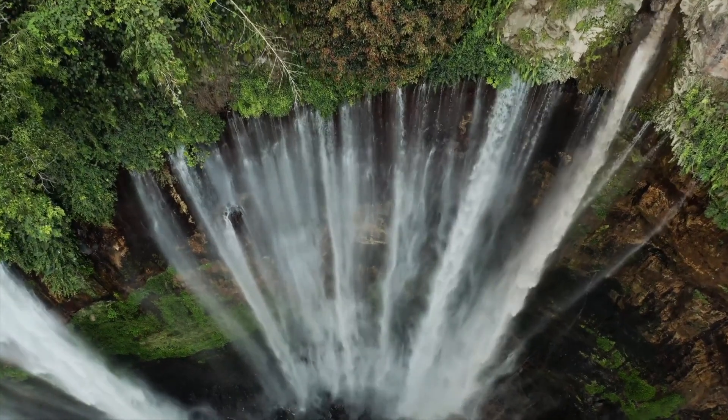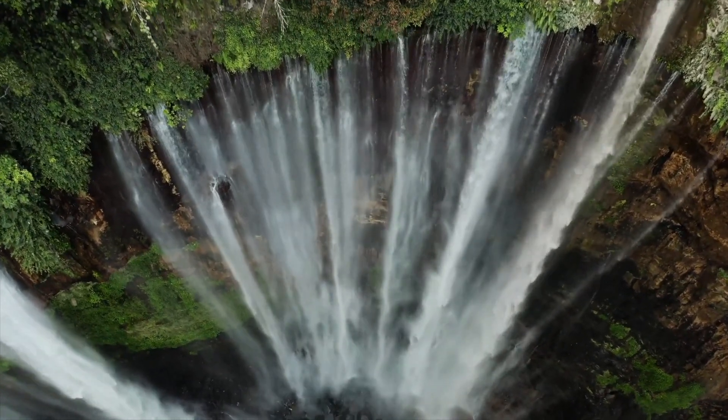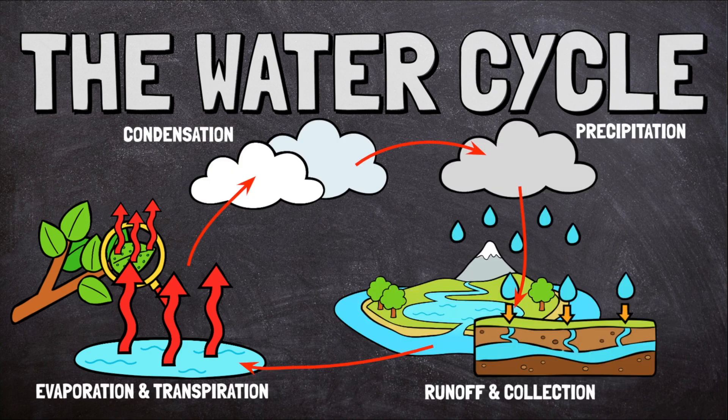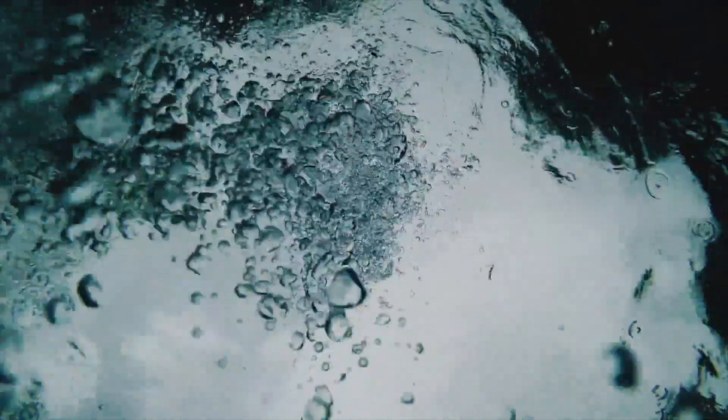Earth's water can move from place to place through a process called the water cycle. In this process, water rises up into the air to form clouds, then it falls back to Earth's surface again. To start the cycle, water must change from a liquid into a gas so that it can rise up into the sky.